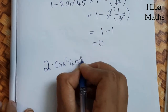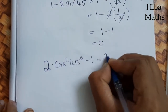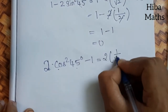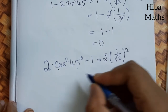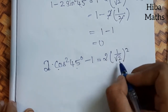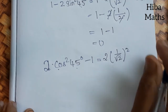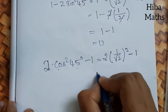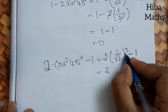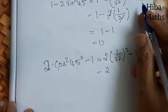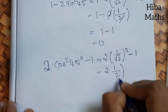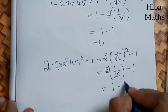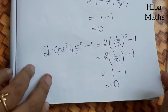3rd condition: 2cos²45° − 1. cos45° = 1/√2. So (1/√2)² = 1/2. Then 2 × (1/2) − 1: the 2s cancel, giving 1 − 1 = 0. So all three values equal 0, and the equality is verified.